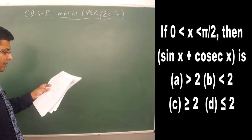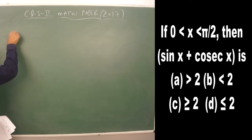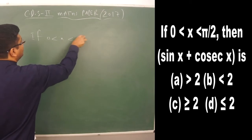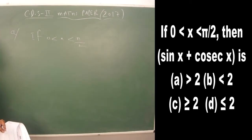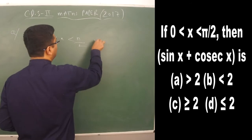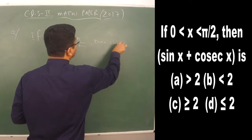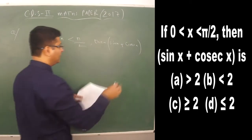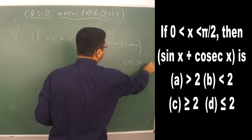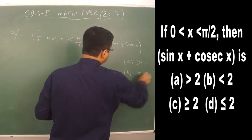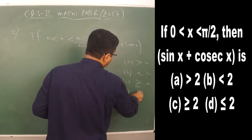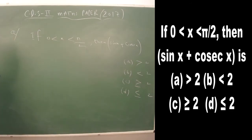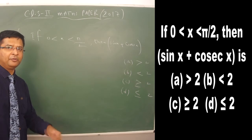The next question is also from trigonometry. If x lies between 0 and π/2, what is the value of sin x + cosec x? The options given are: greater than 2, less than 2, greater than or equal to 2, and less than or equal to 2.